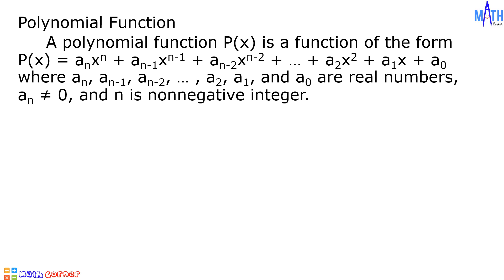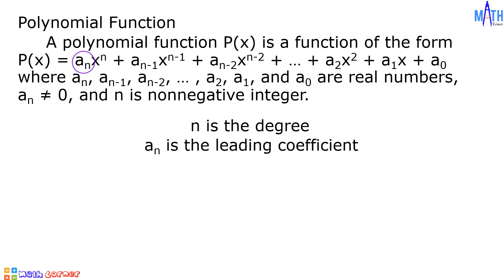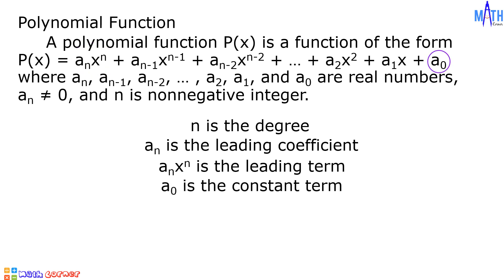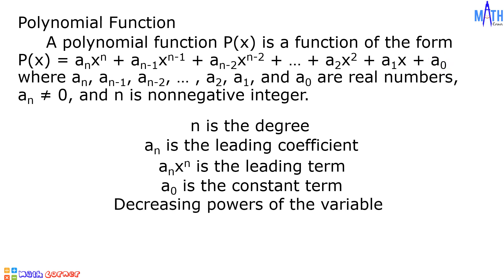The function is said to be of degree N. A sub N is the leading coefficient, and A sub N times X raised to N is the leading term. If A sub 0 is not equal to 0, then A sub 0 is called the constant term. The terms of a polynomial may be written in any order; however, if they are written in decreasing powers of the variable, the polynomial function is in standard form.